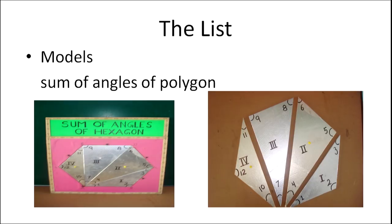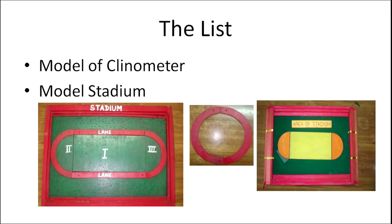Different polygons can be explored by dividing them into different triangles. Then we can have models of a clinometer and a model of a stadium. We can divide the stadium into different parts: one part is a semicircle; joining two semicircles makes a full circle, and the middle part is a rectangle. We find the area of the circle and the rectangle to get the total area of the stadium.